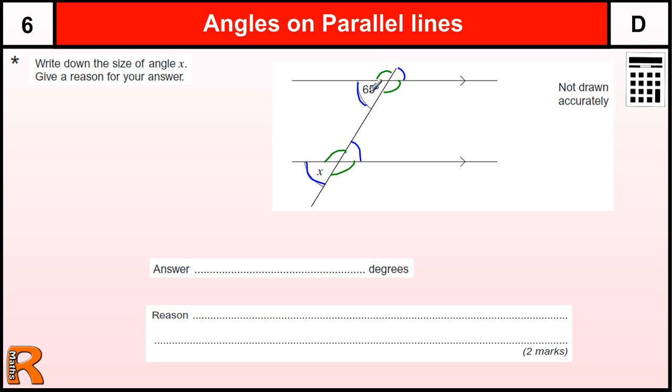Where the angles are on the same position on both parallel lines, that's called corresponding angles. So we need to use that as our reason. Corresponding angles, and the reason is they are equal, so this one is 65 degrees.